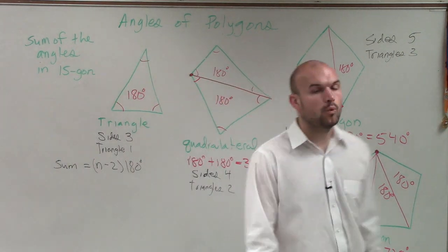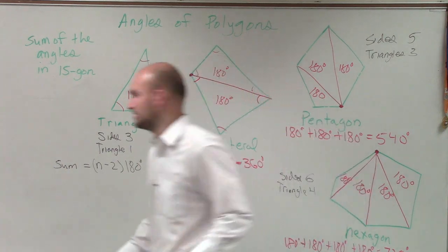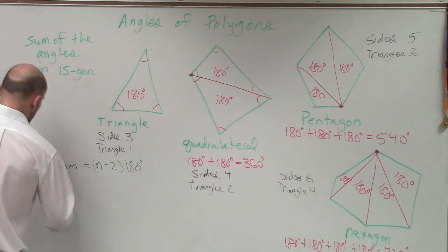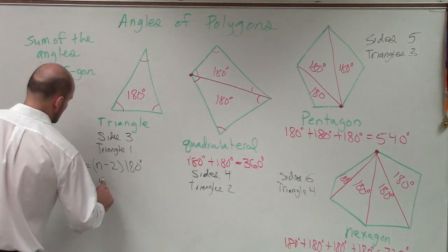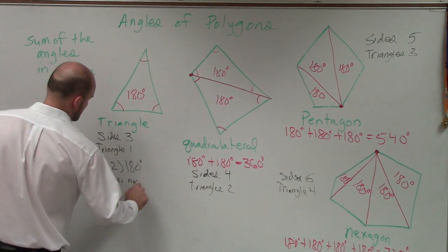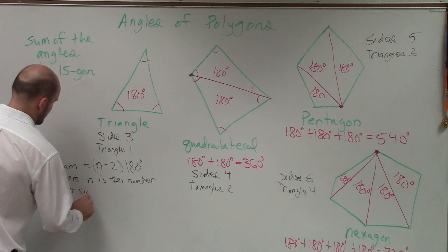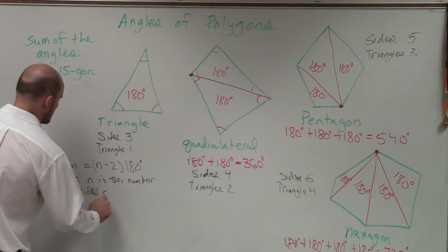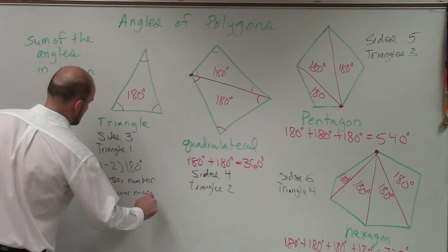All right, where, no, no, no, Zach, Zach, Zach, Zach, you need to rewrite this down. Where n is the number of sides of your n-gon.